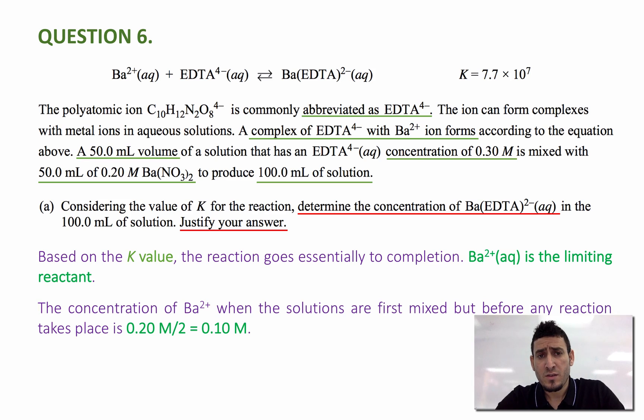Now the concentration of Ba 2+, when the solutions are first mixed but before any reaction, will be half of the original one because the volume is doubled. It used to be 50 and now it's 100.